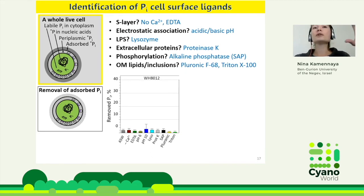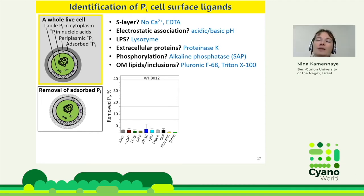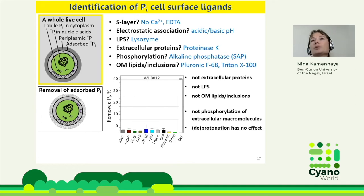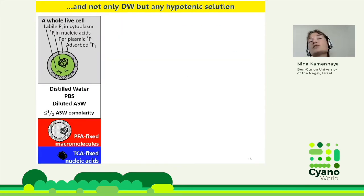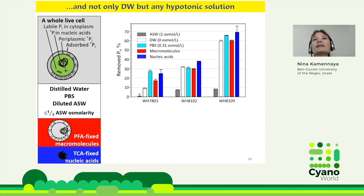None of those treatments removed the buffer substantially. Then, probably by mistake or in desperation, I washed the cells with distilled water — and got 40% removal. And washing with PBS (phosphate-buffered saline, full of cold phosphate) also removed the radioactive label. Even washing with artificial seawater diluted more than 1:3 with distilled water washed away the buffer. So it has something to do with osmolarity.